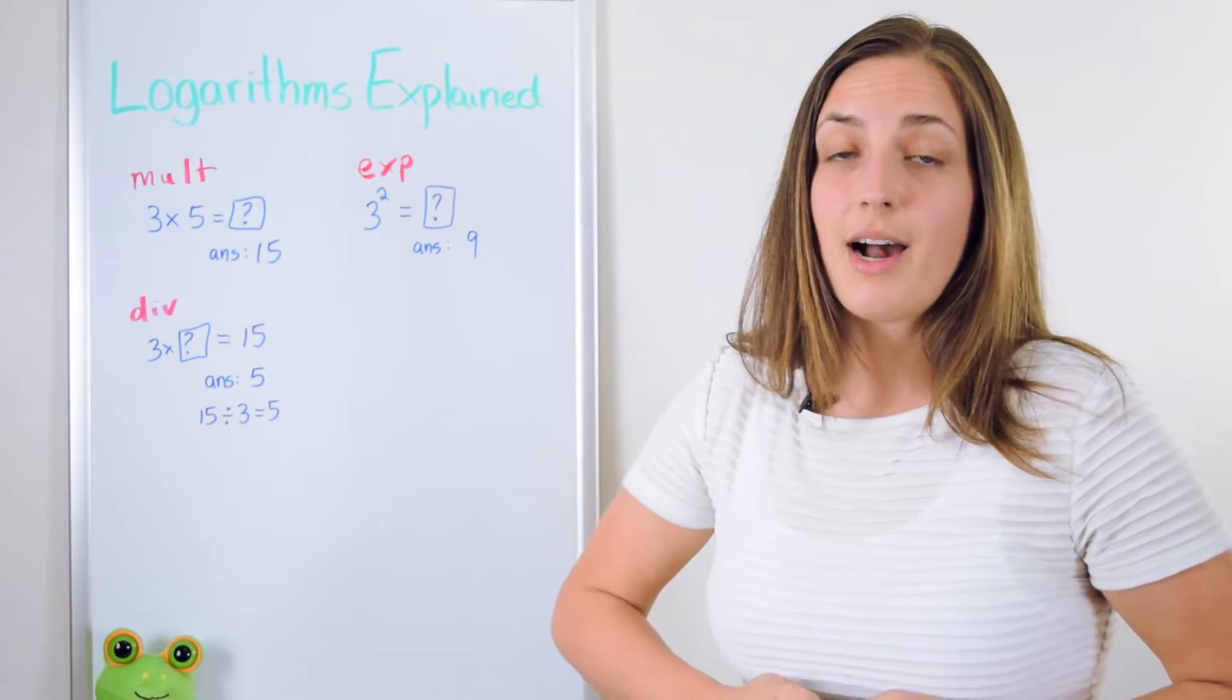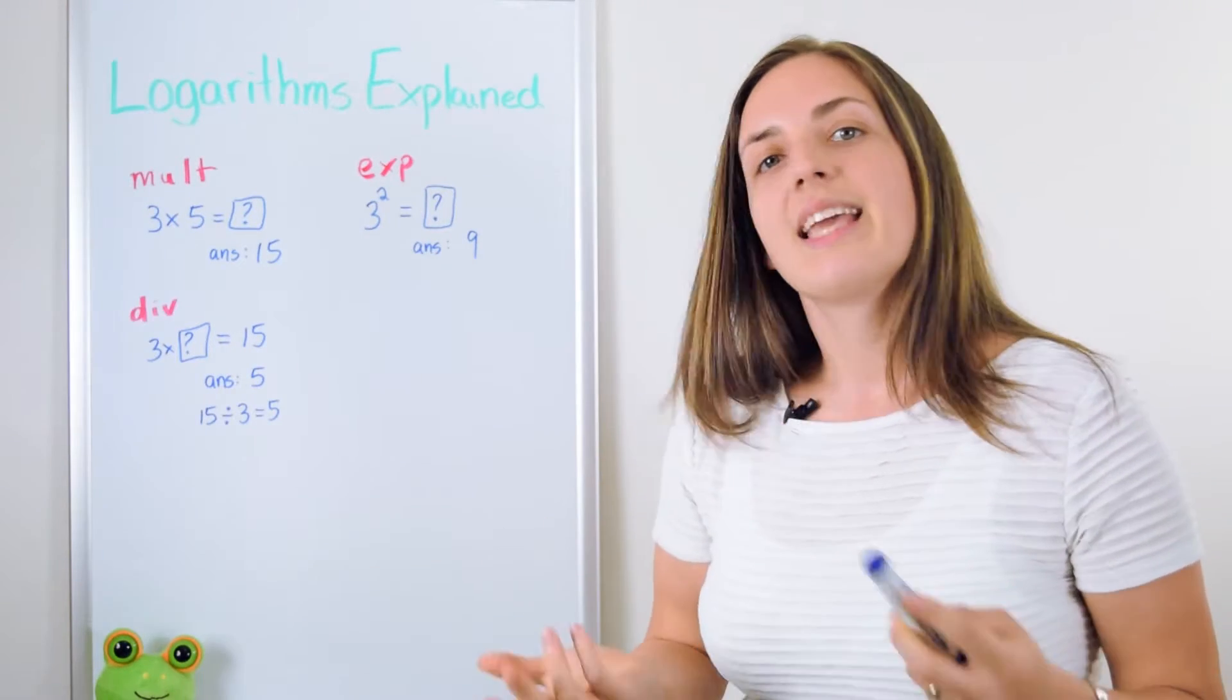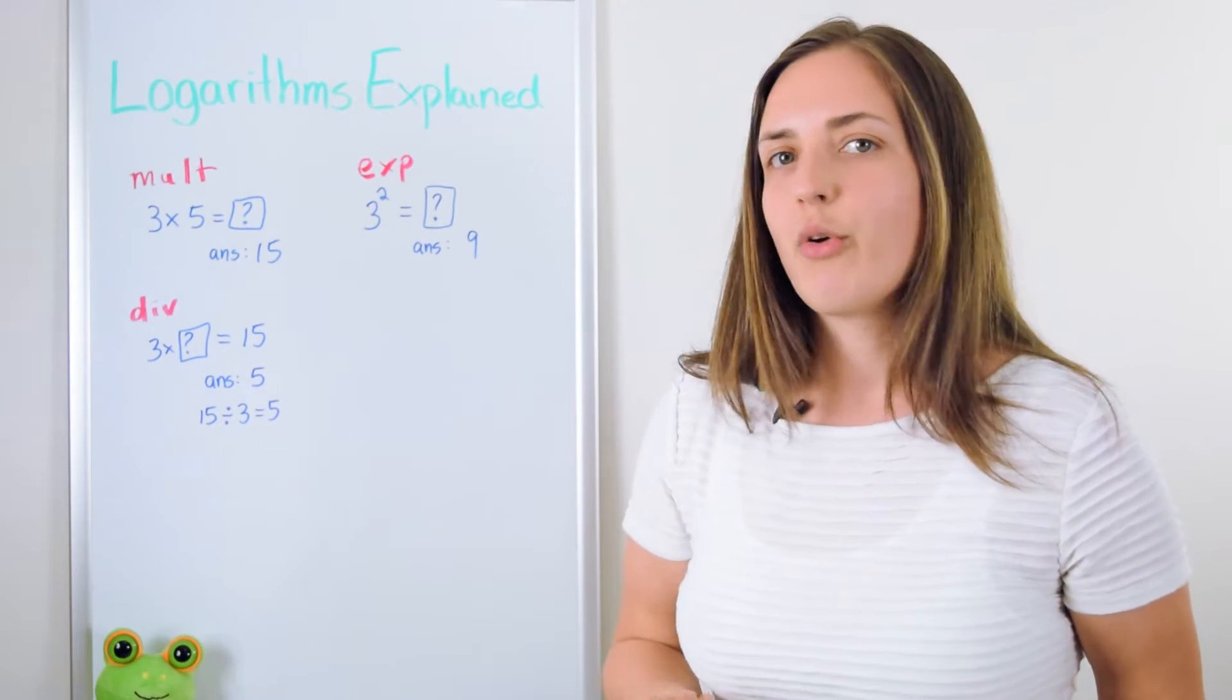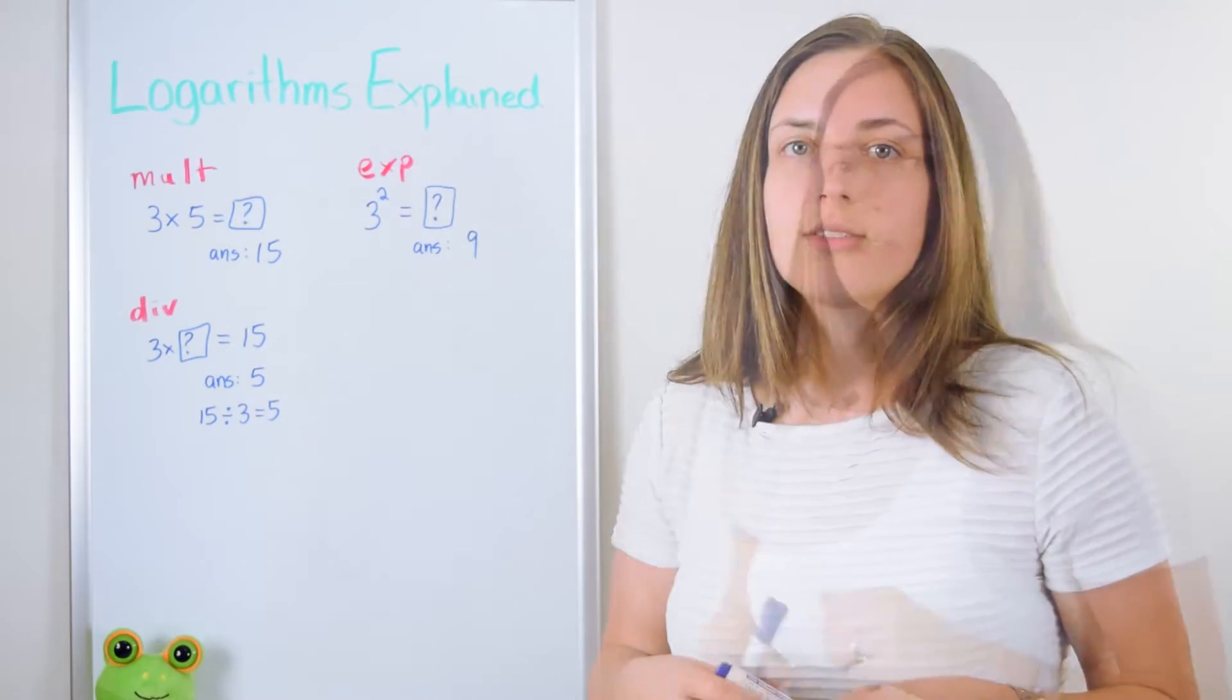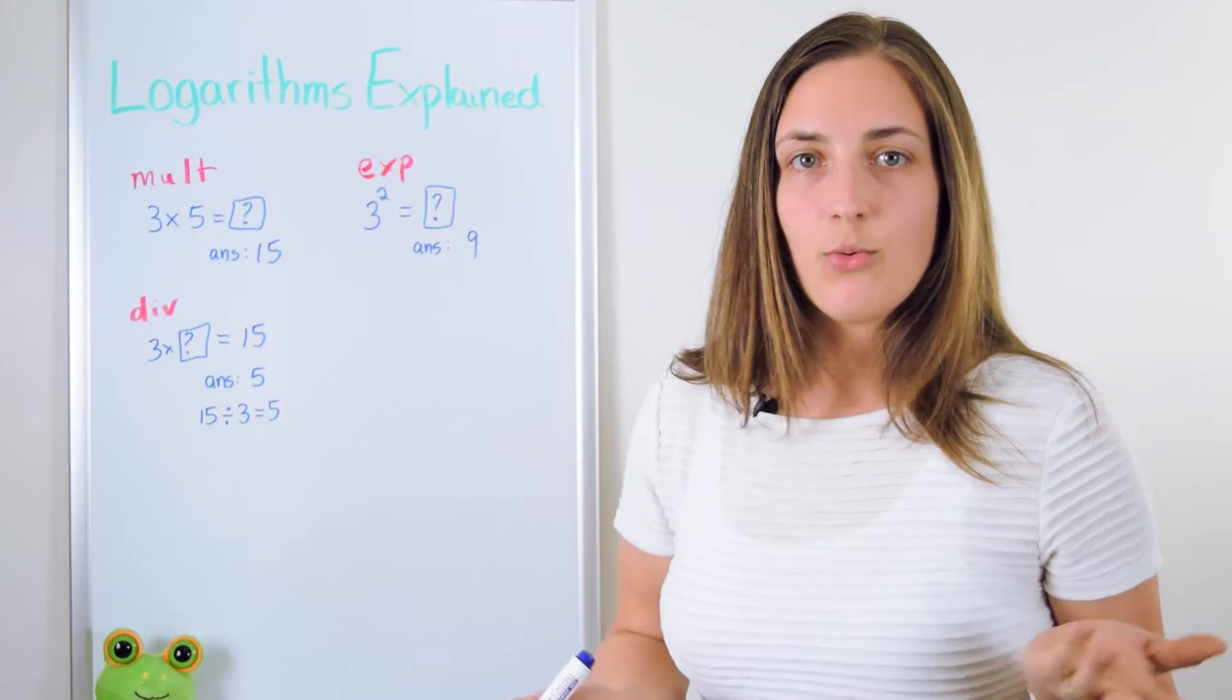If I say 3 to the power of 2 equals what, the answer is 9, and that's because you know that exponentiation tells you how many times to multiply. So it means multiply 3 twice. So we have 3 times 3 equals 9.